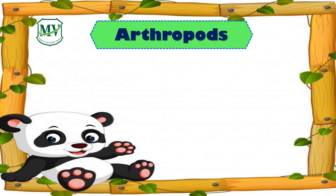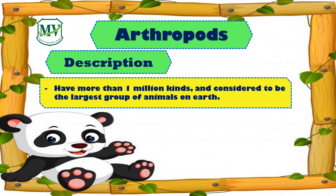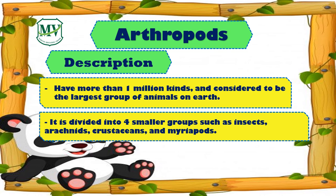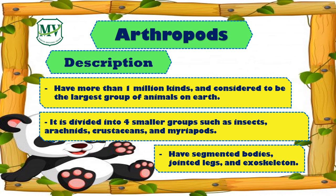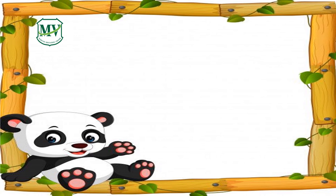The last group are the arthropods. They have more than one million kinds and are considered to be the largest group of animals on earth. They are divided into four smaller groups: insects, arachnids, crustaceans, and myriapods. They have segmented bodies, jointed legs, and exoskeletons.